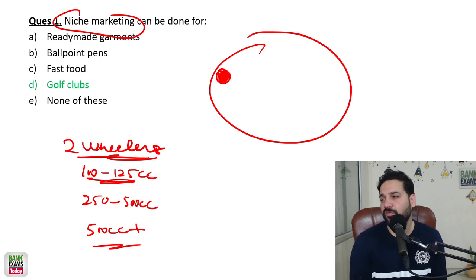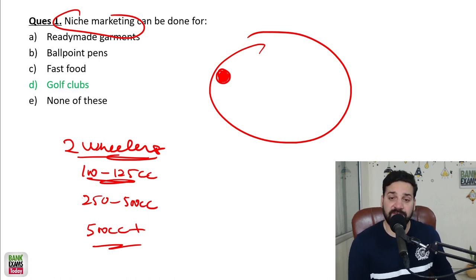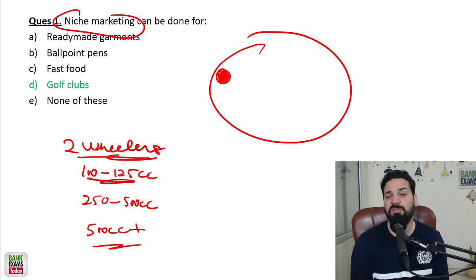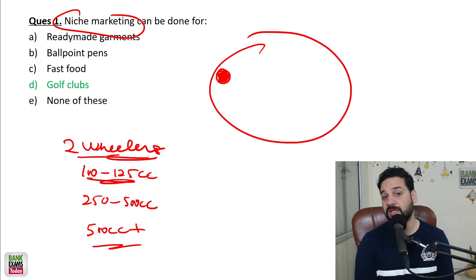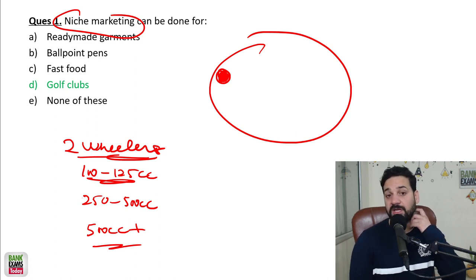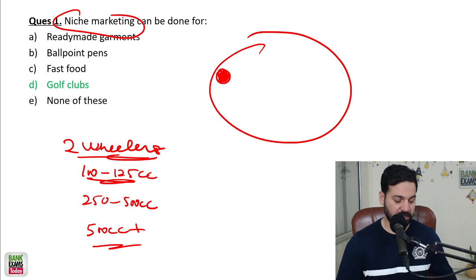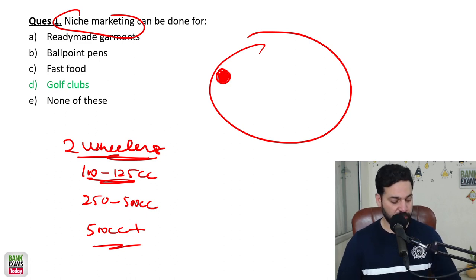Niche marketing can be done for golf clubs — only someone who plays golf will use those. Fast food is for everybody. Ballpoint pens are used by everybody. Ready-made garments are worn by everybody. Those are not niche products. Let's move forward to question number two.